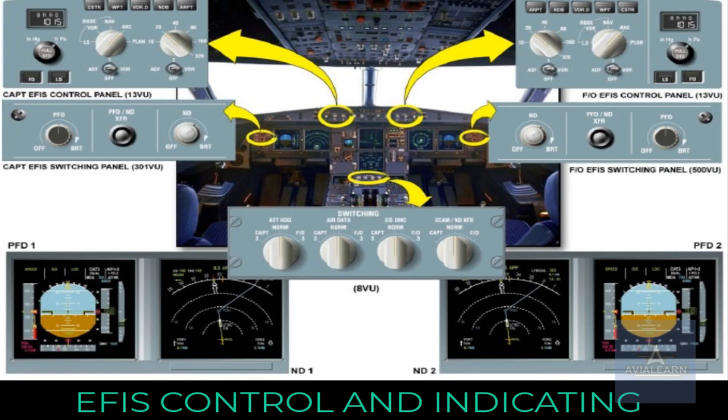EFES control and indicating. Flight parameters are displayed on the Primary Flight Display, PFD, while navigation data is displayed on the Navigation Display, ND. Outboard of the PFDs, there are control knobs to adjust the brightness of the associated PFD and ND, and to turn the displays off. Two EFES control panels are used to select what is displayed on the EFES screens, divided into two sections: one associated with the PFD and the other with the ND.